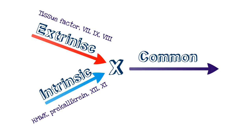Both the extrinsic and intrinsic pathways eventually lead to factor 10 activation. Factor 10 activation leads to the common pathway. Within the common pathway, you have factor 5, prothrombin conversion to thrombin, and fibrinogen conversion to fibrin. This consists of the entire coagulation cascade.